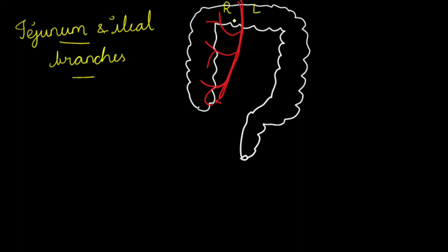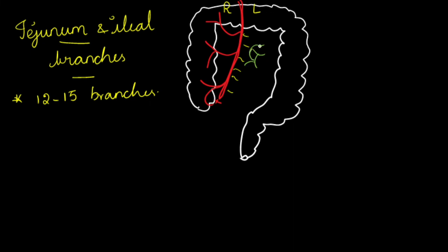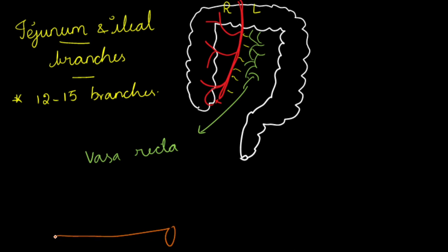Regarding the left side branches — the jejunal and ileal branches — there will be 12 to 15 branches supplying both the jejunum and ileum. These anastomose with each other and form arcades. Imagine the jejunal or ileal wall: because of the anastomosing between these vessels we can see the arcades formed along the bowel wall.